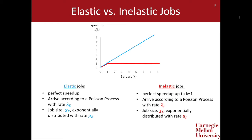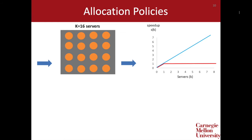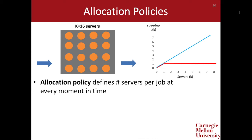Given this model, we'd like to find allocation policies which define, at every moment in time, the number of servers allocated to each job in the system. The goal of an allocation policy is to minimize the mean response time across jobs. So given this model, what are some natural policies?